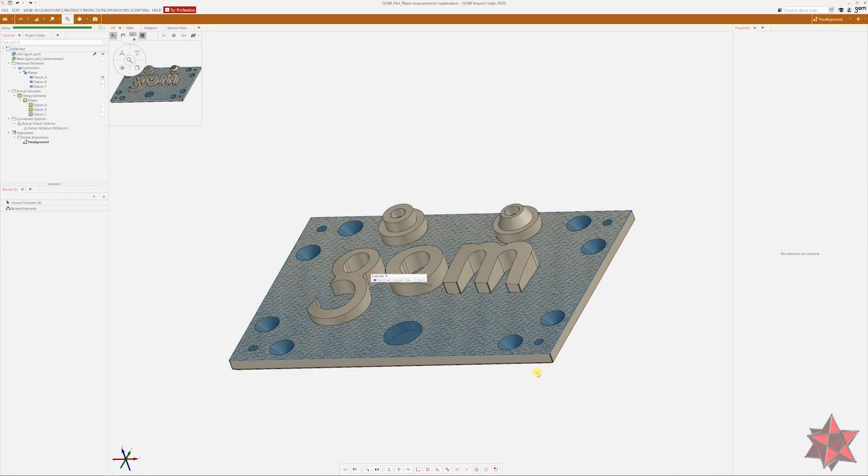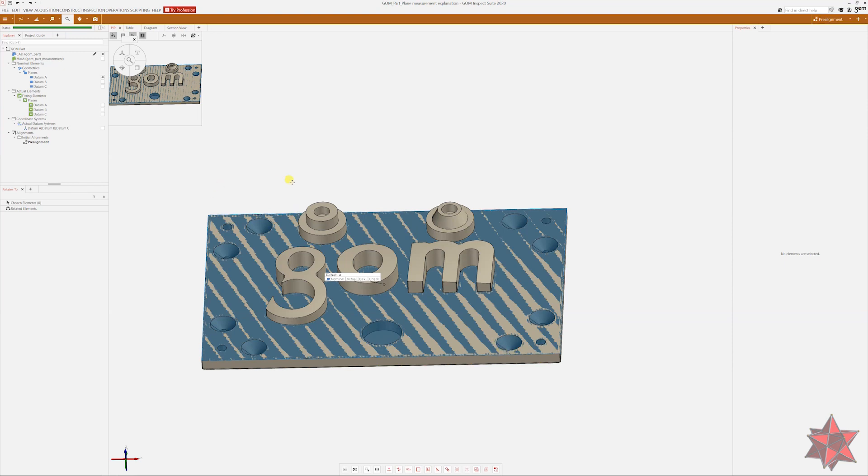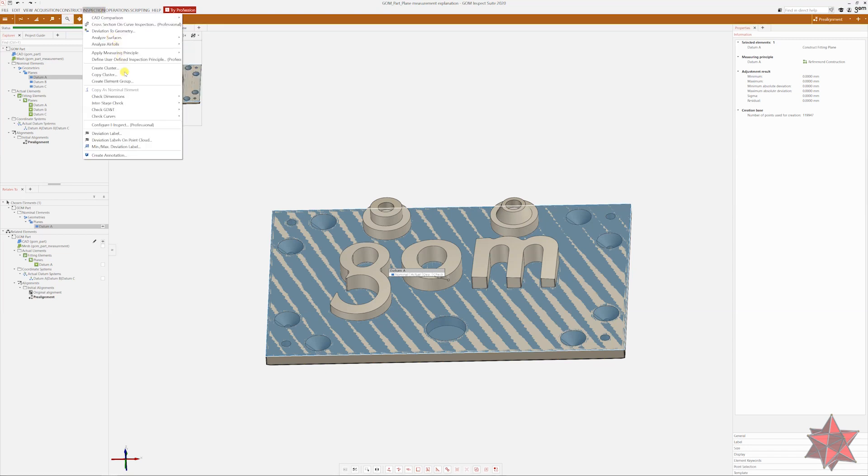Okay so we are in GOM Inspect with the GOM part again and we are going to evaluate the flatness of datum A, this plane from here. Okay so first of all select datum A, then go to Inspection, go to Check GD&T, Flatness.